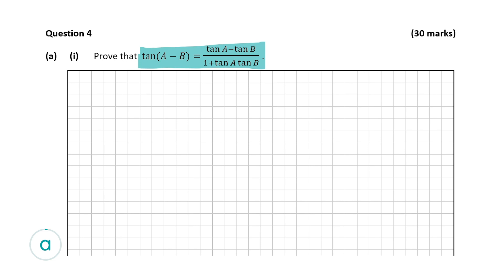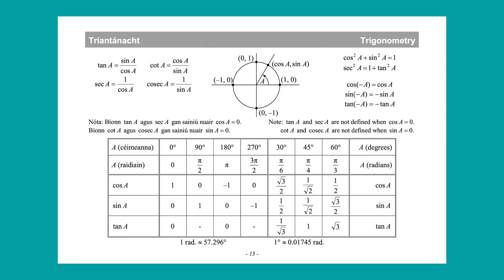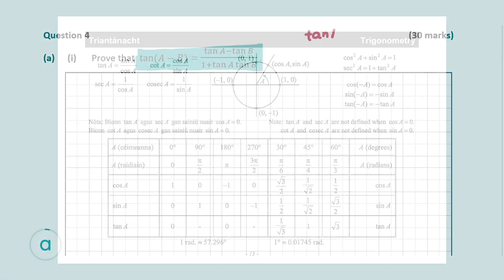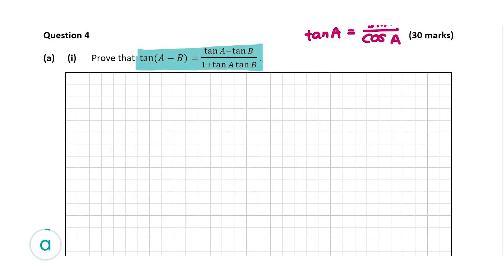Let's go to the log tables and find the first formula we're going to need. The first rule is tan of A is equal to sin of A over cos of A — this writes tan in terms of sin and cos. Since the question asks about tan of A minus B, we'll use this rule. So tan of A minus B is equal to sin of A minus B all over cos of A minus B.